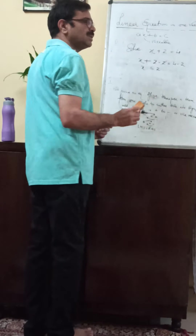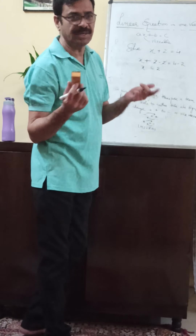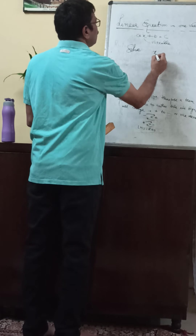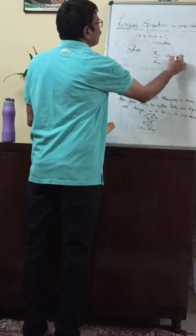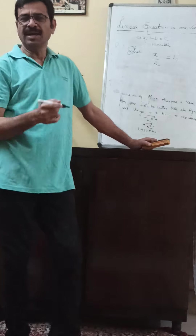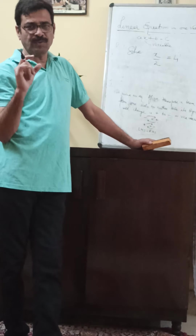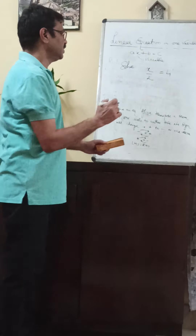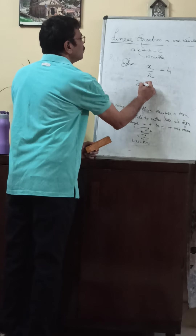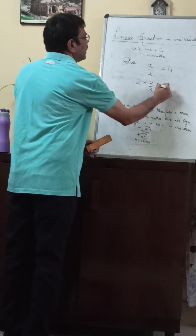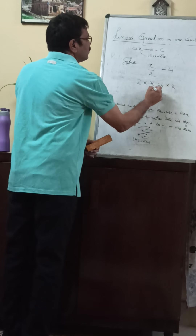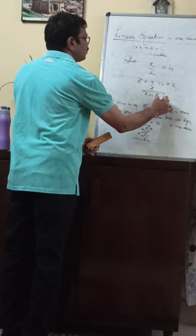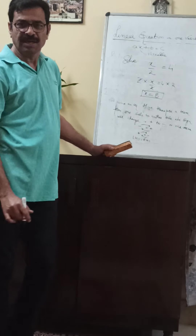Now I will apply rule number three. Solve: x upon two is equal to four. In rule number three, we can multiply by a non-zero number to both sides. Here I am multiplying by two on both sides. Two will cancel with this two and you will get x is equal to eight. So x equals eight is the solution of the equation.